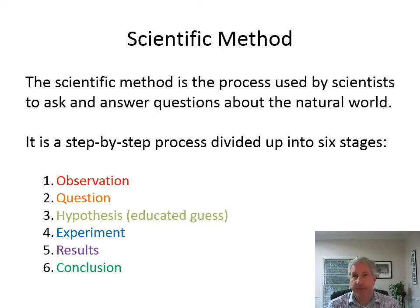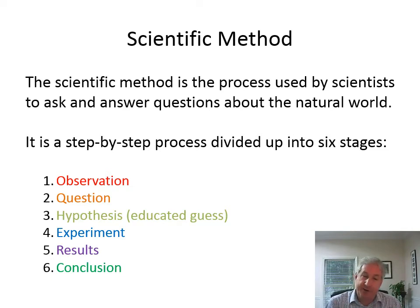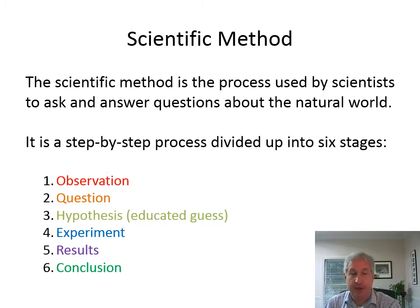First we start with an observation, then you ask a question about it, then you produce an educated guess — a hypothesis. Then you do an experiment to test your hypothesis, look at the results, and draw a conclusion. From those results you can either discard, modify your hypothesis, or your hypothesis is confirmed. You then do more experiments to make sure it's actually true. It's a series you do multiple times trying to figure out how something works.